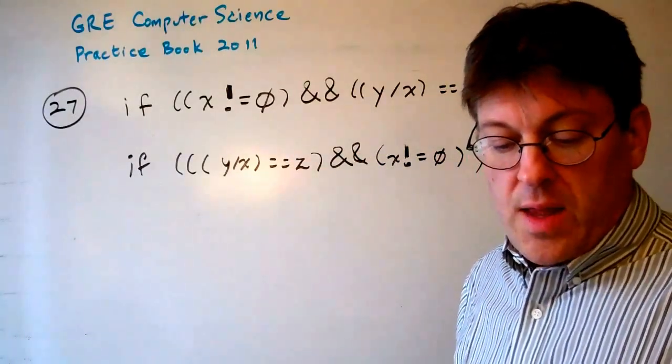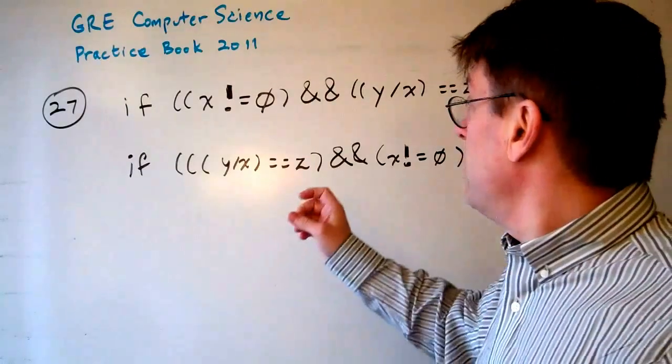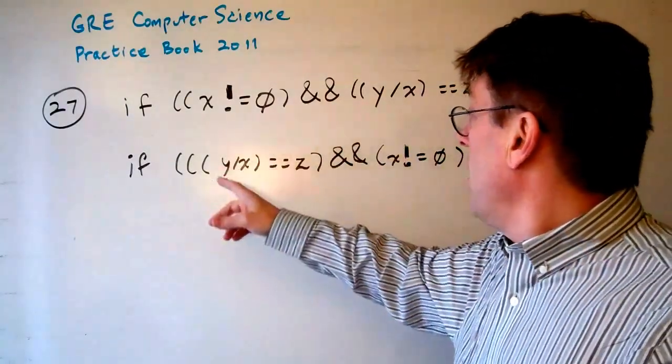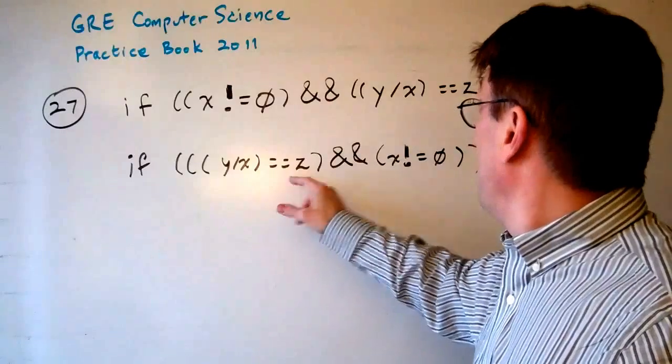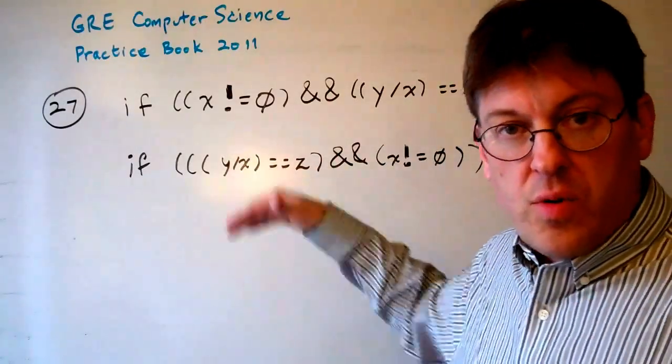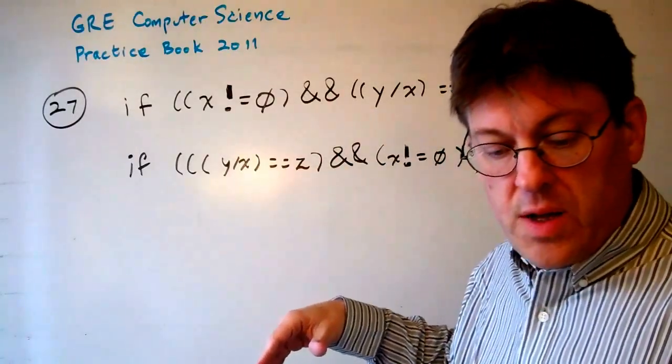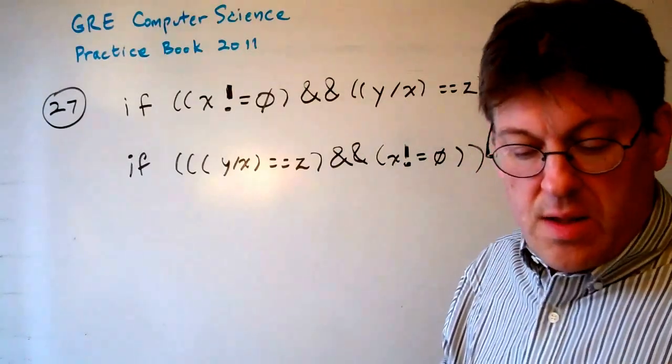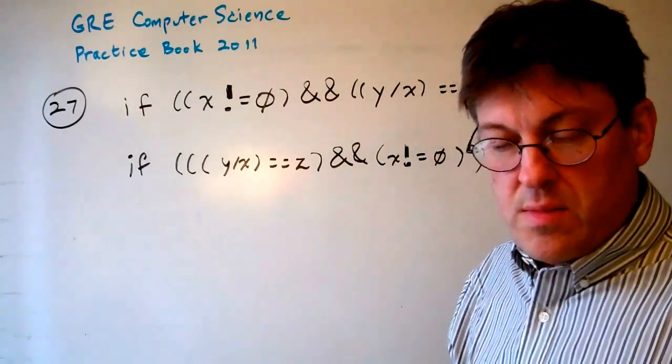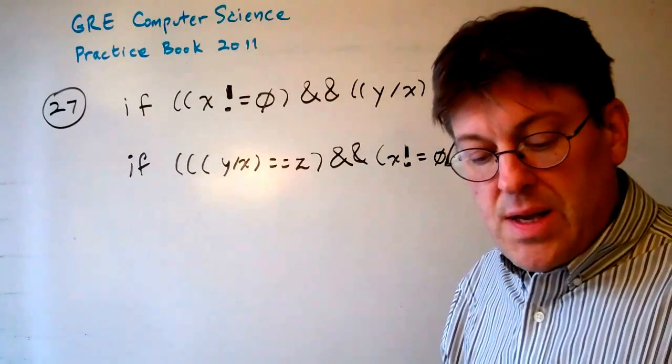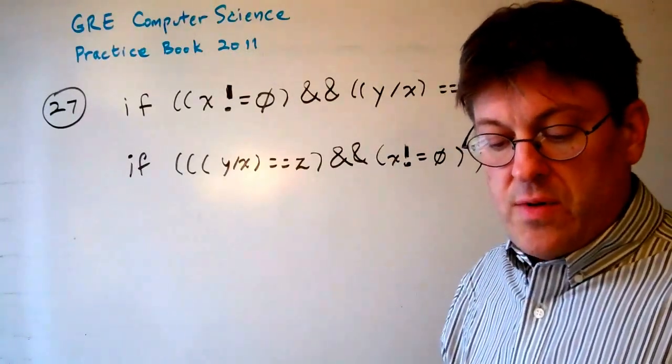B, that there exists a z that may make the two code fragments behave differently. And C, there may exist a y that makes them behave differently. D, there may be an x that makes them behave differently.